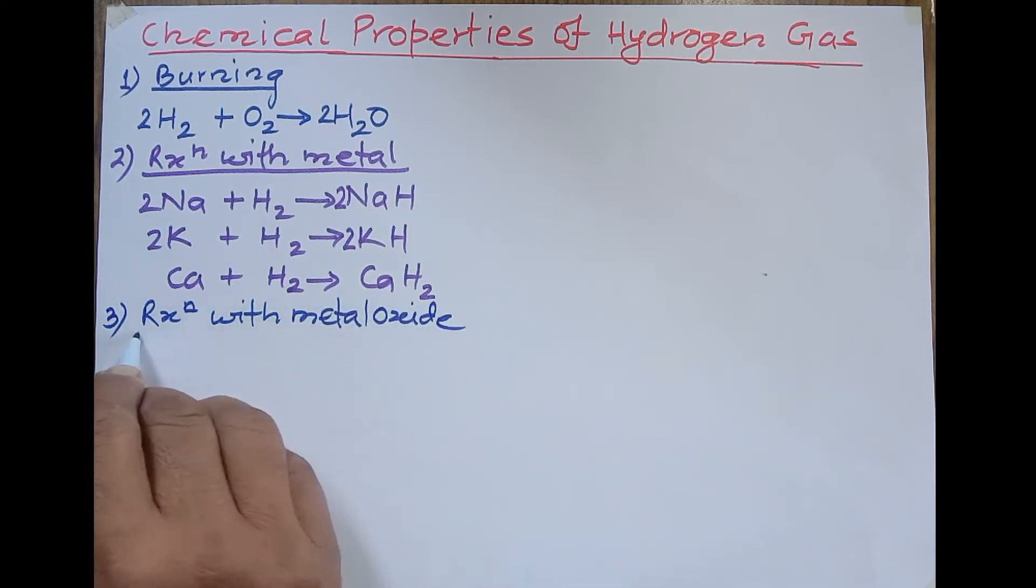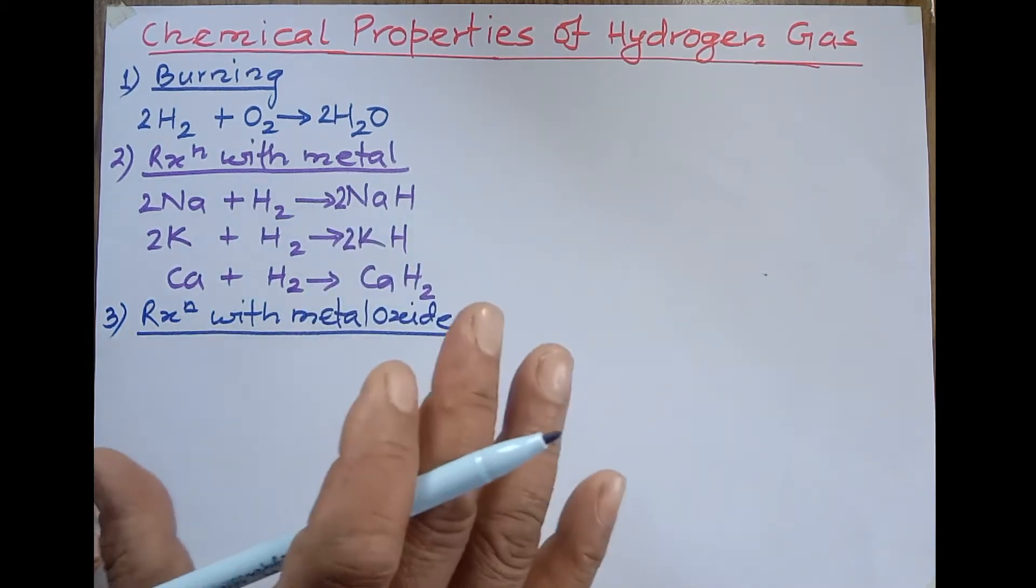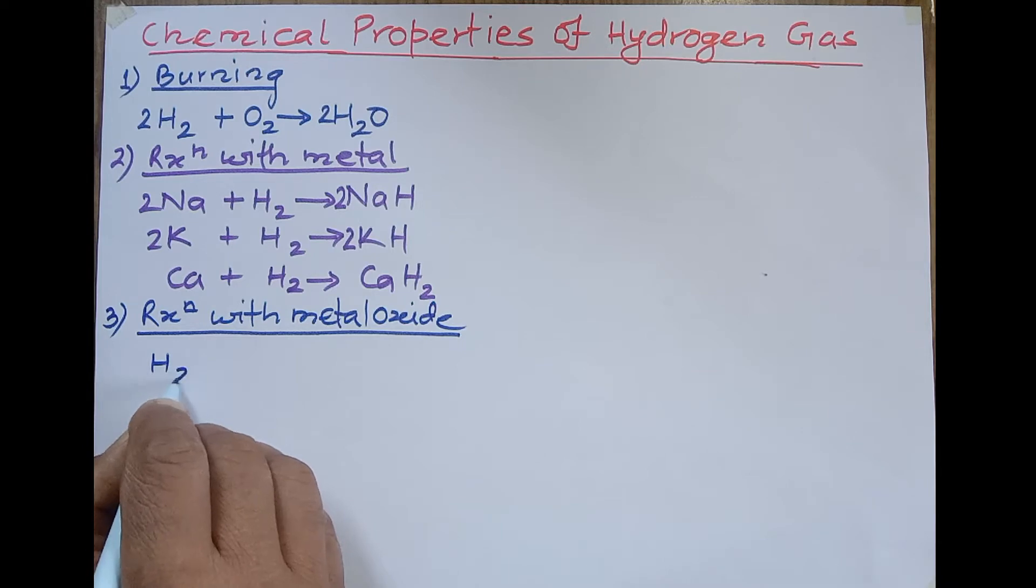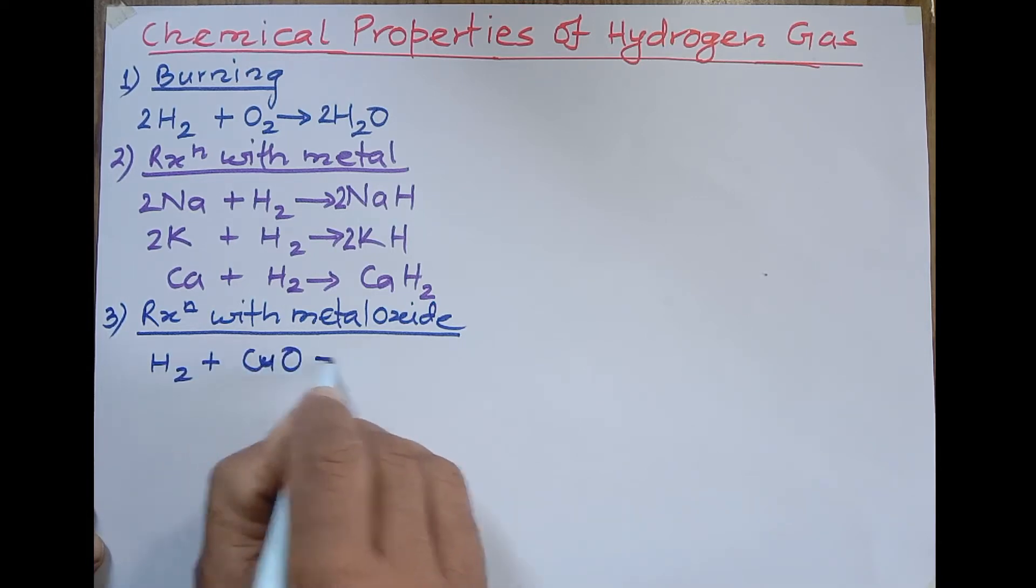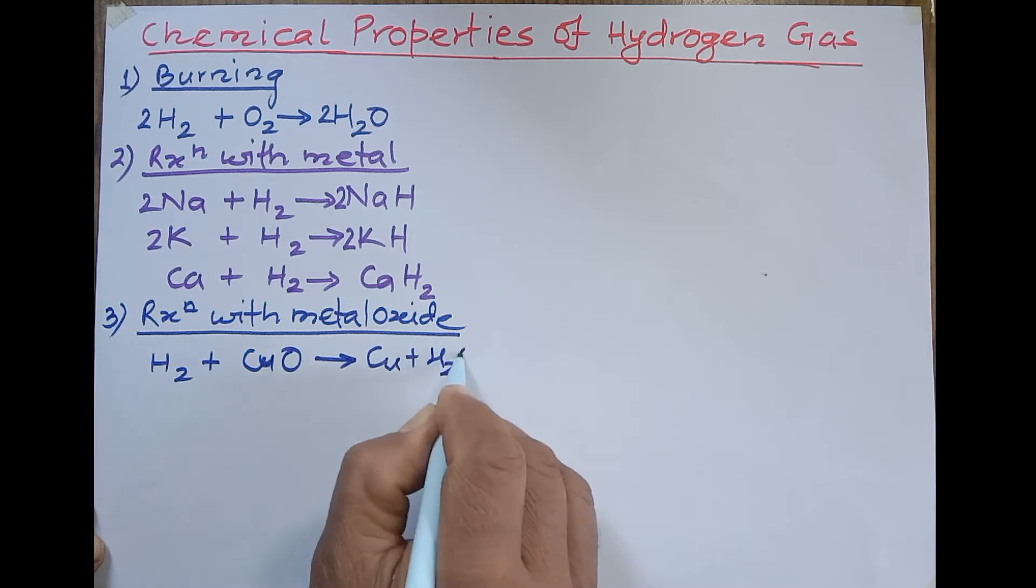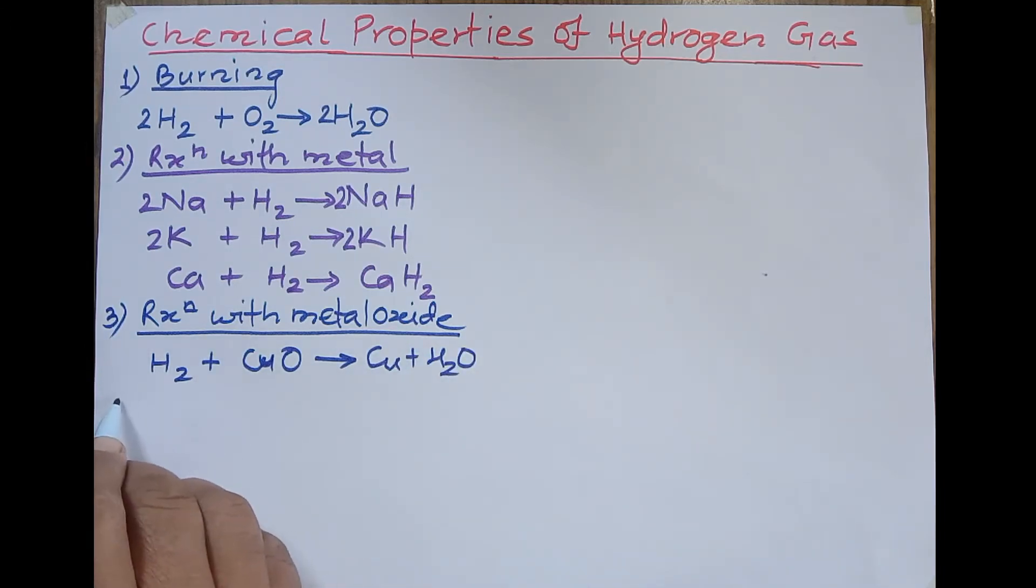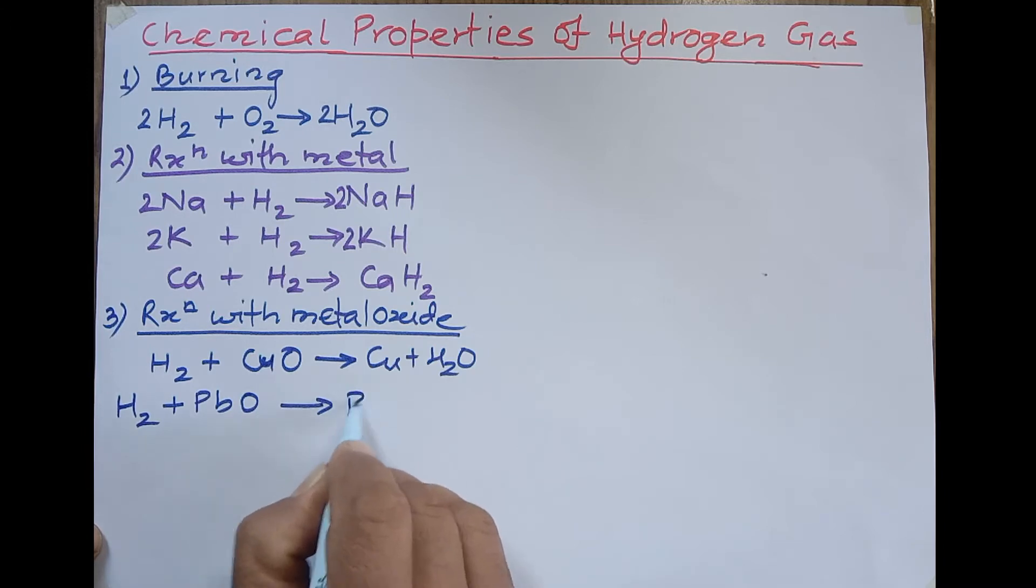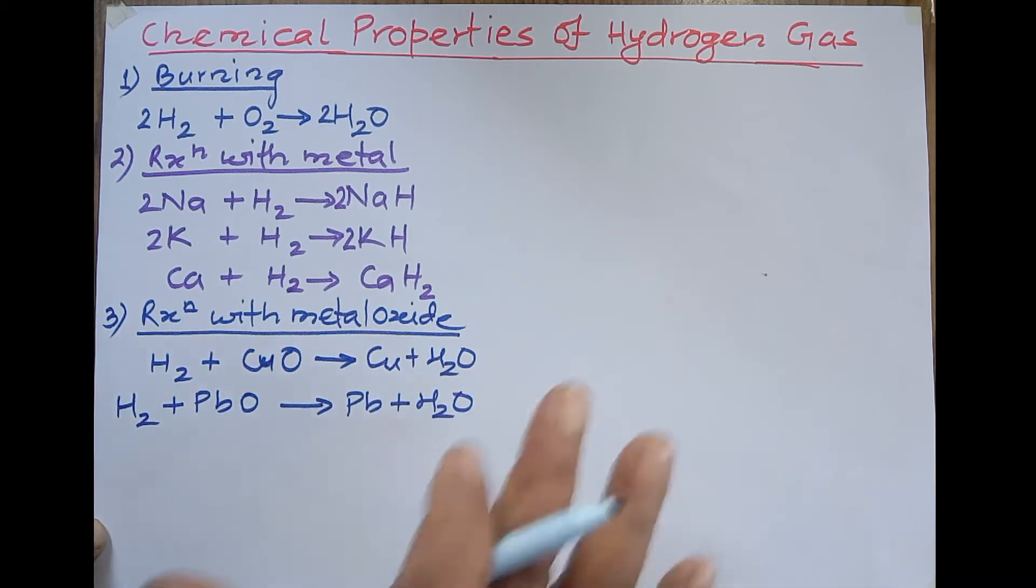The reaction is: hydrogen when passed over heated copper oxide, then copper is separated with the formation of water. H2 + CuO → Cu + H2O. In the same way if hydrogen gas is passed over lead oxide, then lead is separated: H2 + PbO → Pb + H2O. This is a balanced equation.